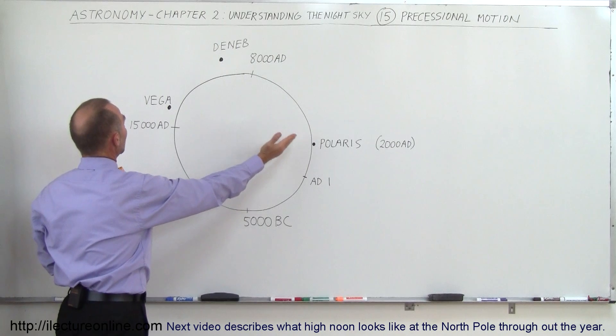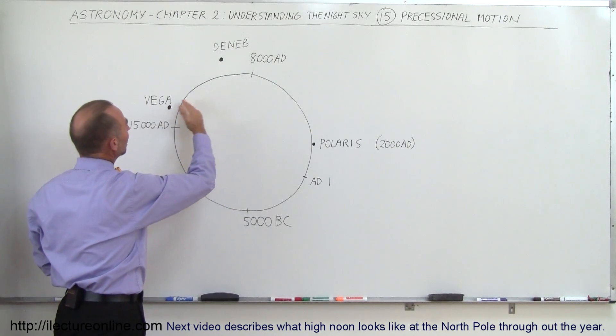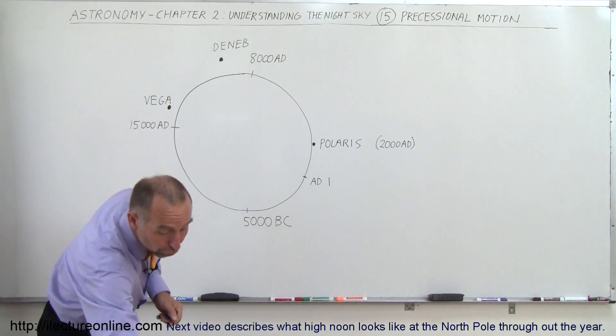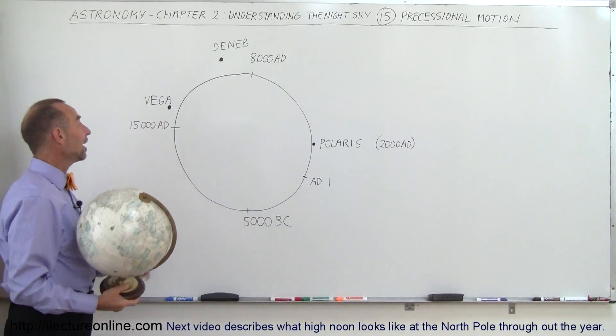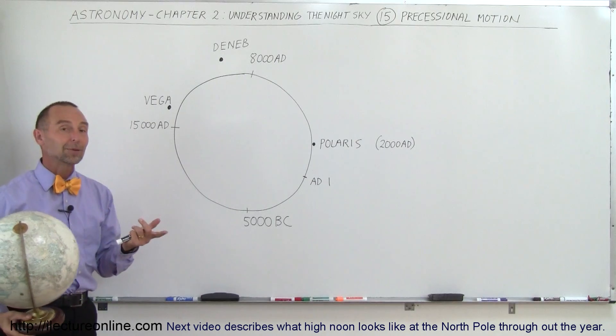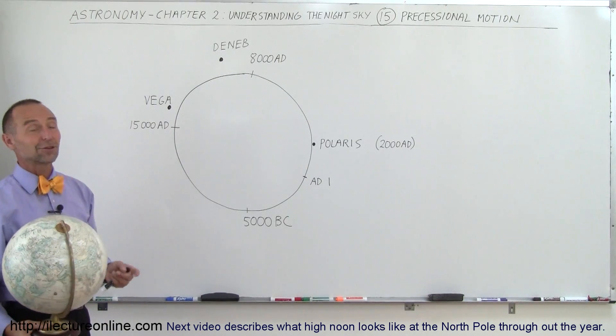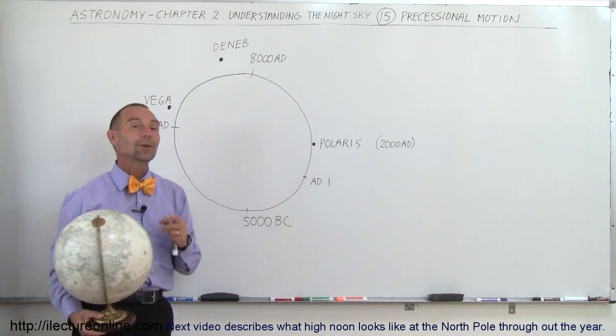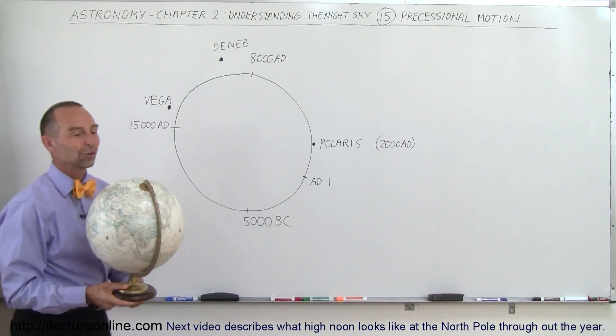And then, if you can see here, in about maybe 12,000 years or so, the Earth's North Pole will actually be pointing towards Vega. So Vega will be the North Star for the people that live on the Earth 12,000 years from now. Eventually, it will come all the way back around, and Polaris will be back at the North Celestial Pole.